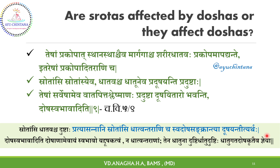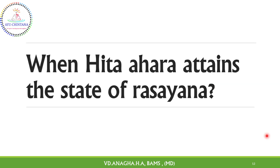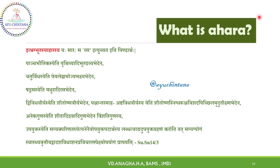Aren't you curious to know when Hita Ahara attains the state of Rasayana? Let's explore further. Firstly, what is Ahara? Ahara is that which is Panchabhautika of four kinds — Peya, Leha, Bhojya, Bhakshya — which comprises of six Rasas, which are of either Ushna or Shita Virya, in Kampasas 20 plus Gunas, which is properly taken following all the codes and conducts, and also which is properly digested. Such type of consumed material is called Ahara.